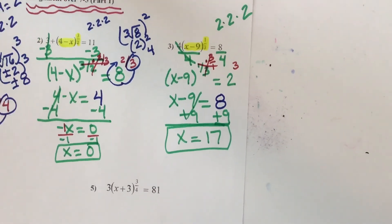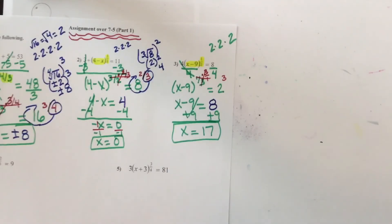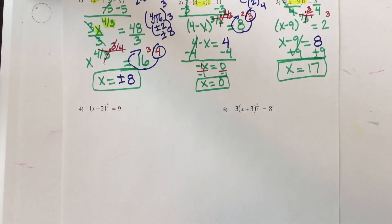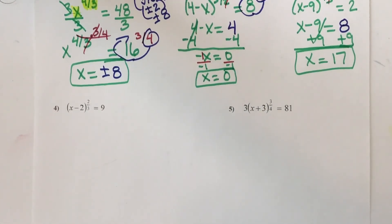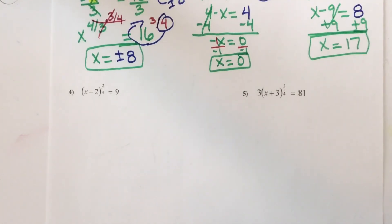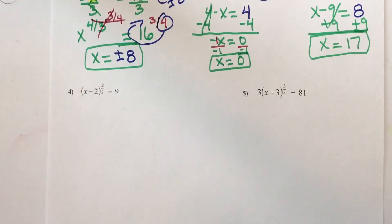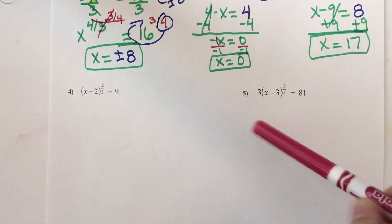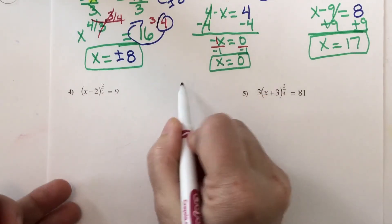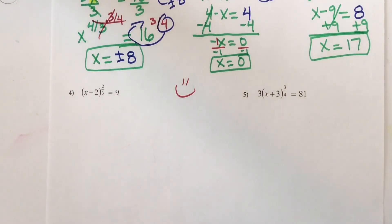What I want you to do is try 2 more problems — number 4 and number 5. Remember, if you end up taking an even root, you'll need to slap down a plus or minus, because when you take an even root, there's a plus or minus. When you get these problems done, take a picture of your work and post it to Canvas. And that's all for today — smiley face!